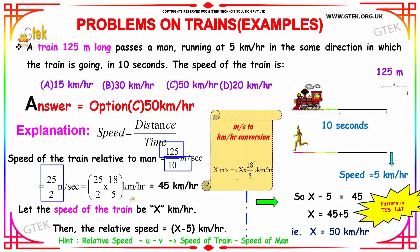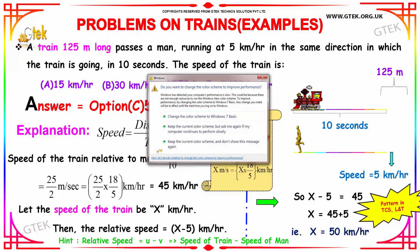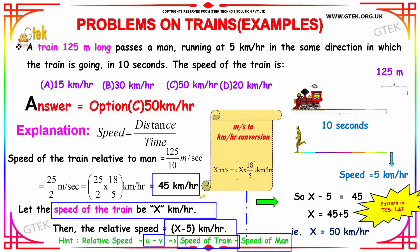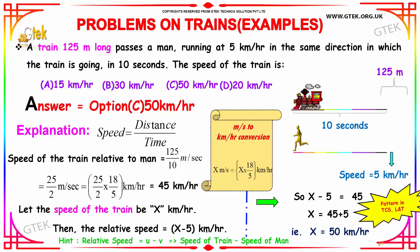Converting into kilometer, you need to multiply with 18 by 5, we got 45 km per hour. This is the speed of the train relative to man. I am trying to calculate the speed of the train which is X kilometer per hour, and the relative speed is the speed of the train minus speed of the man, which is nothing but X minus 5 kilometer per hour. The relative speed is 45 km per hour, so X minus 5 is equal to 45. X equal to 50 km per hour. This is the speed of the train.